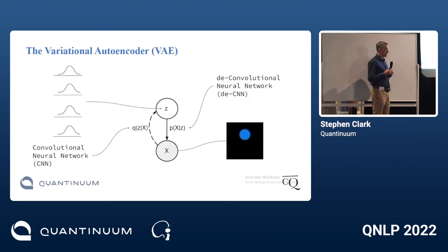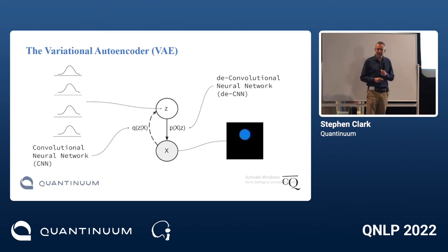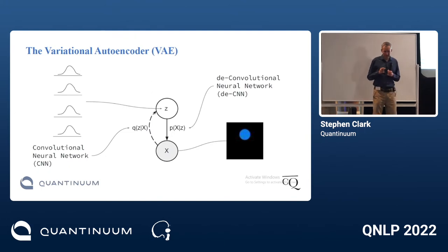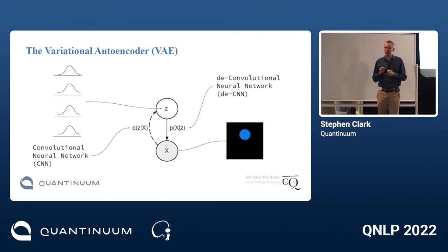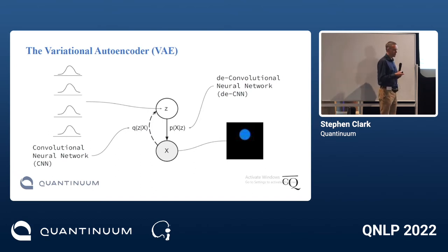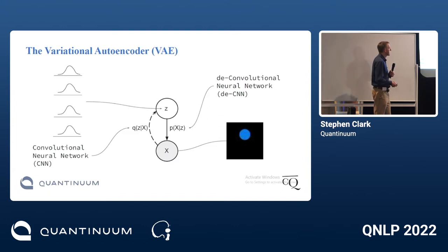Our first system is purely classical, based on a variational autoencoder. There's already work in the literature using VAEs for concept learning — notably the beta-VAE from DeepMind about five years ago. An important clarification: the beta-VAE tries to learn the conceptual domains themselves, discovering that there are four factors of variation (shape, color, size, position). We're not trying to do that. We make life easier by assuming we know the conceptual domains in advance, so we can focus on the interesting question of what the conceptual representations should be.